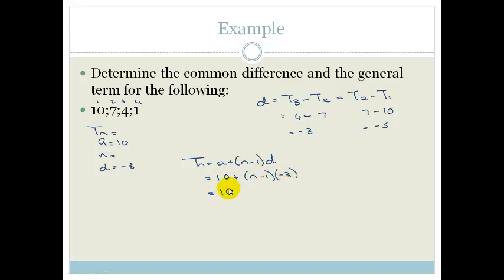Which becomes 10. We multiply this out. It becomes -3n minus times the minus to the plus, plus 3, which equals 13 - 3n. Nice and easy.